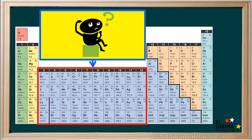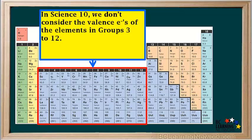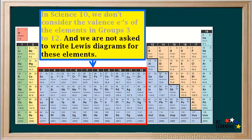You may have been wondering about the elements in the middle section of the periodic table. In Science 10, we don't consider the valence electrons of elements in groups 3 to 12. These are called transition metals. The way electrons behave in these elements is too complex for the model that we're using, and we're not asked to write Lewis diagrams for these elements either. So we'll leave them out in the rest of our discussion of Lewis diagrams.